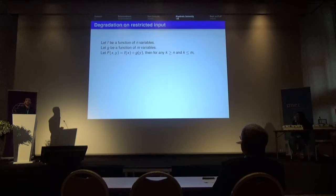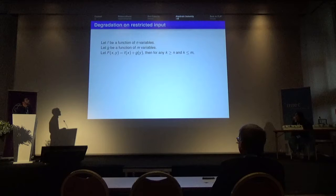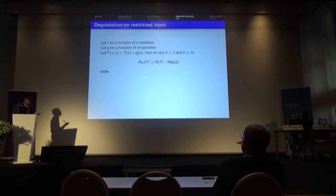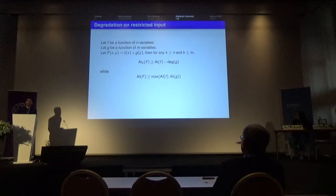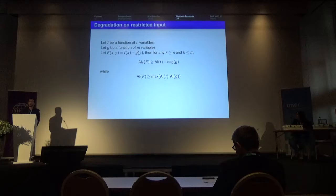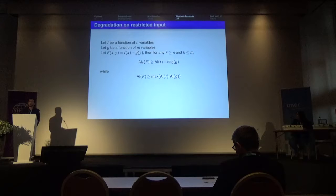We also have a general result: when adding two functions with independently taken inputs, the algebraic immunity of F restricted to fixed Hamming weight k is greater than the algebraic immunity of one component minus the degree of the Boolean function J. This is counterintuitive because in the classical setting adding two functions gives a lower bound, but here adding a J can actually decrease the restricted algebraic immunity — which is problematic when constructing functions with guaranteed high algebraic immunity.